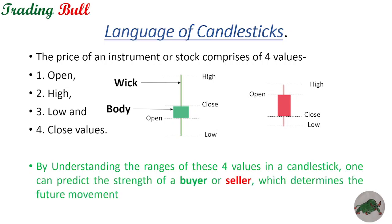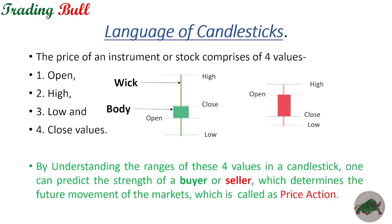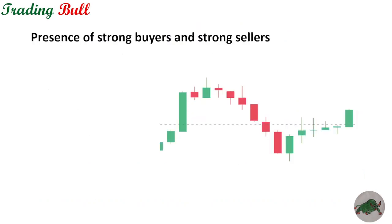By understanding the ranges of these four values in a candlestick, one can predict the strength of a buyer or a seller, which determines the future movements of the market. This is called price action, and price action is the most supreme type of study one can do for predicting the future course of the markets.